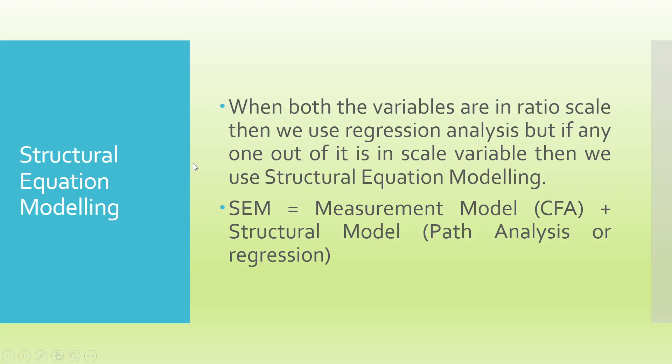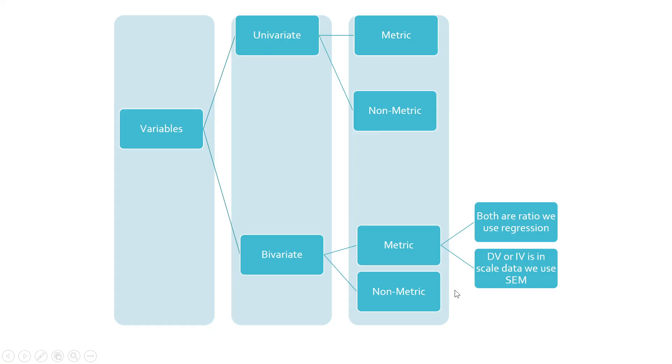Now, in which scenario should we be using structural equation modeling? When the variables are bivariate and one of the variables is in metric scale—one of the DV or independent variable is in scale data—we use structural equation modeling. If both are ratio, we go for regression. I repeat: the variables are bivariate and they are metric. If both of them are in ratio scale, we go for regression. But if either DV or IV is in scale data, like Likert-like scale or Likert scale, we use structural equation modeling.